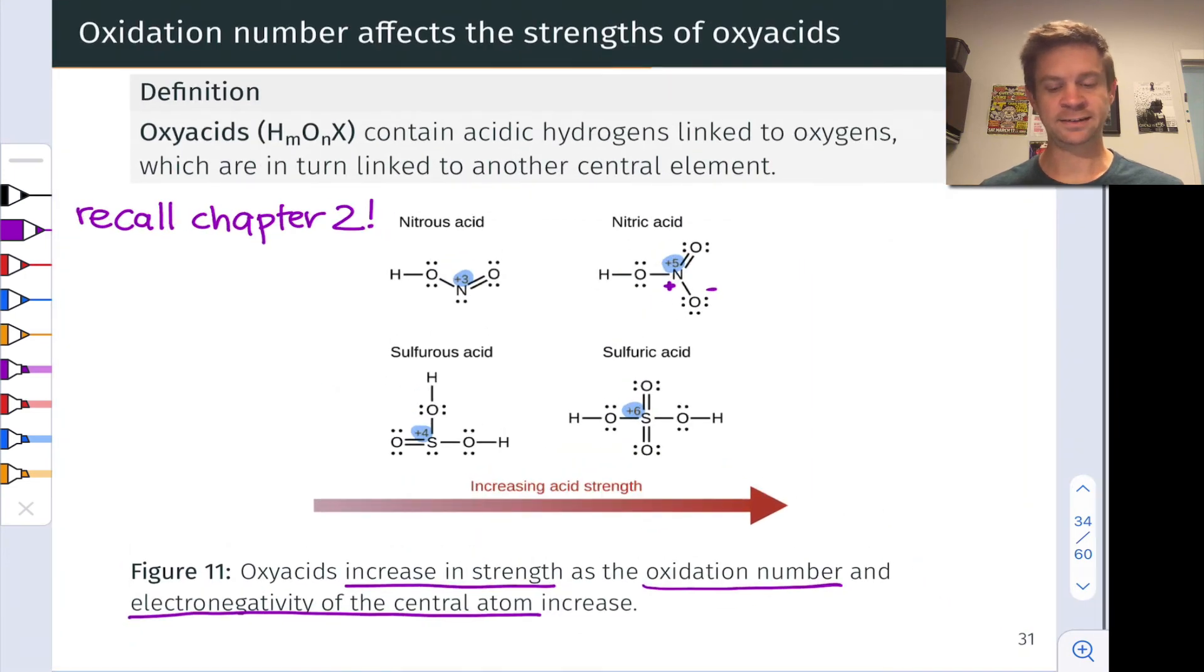So oxyacids have this, just to summarize, this electronegativity effect at the central atom. The more electronegative that central atom is, the stronger the oxyacid, as well as an oxidation number effect, the punchline of which is adding more oxygens to the oxyacid tends to increase the acidity of the compound.